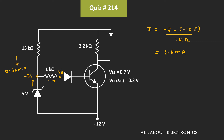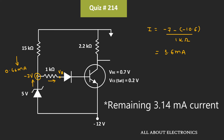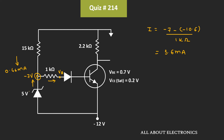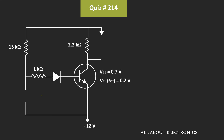So the remaining current should flow in this direction. If we apply KCL at this node, the remaining current should flow in the upward direction through this Zener diode. But if this Zener diode is operating in the breakdown region, then the current should flow in the downward direction. That means this Zener diode is not operating in the breakdown region, and it will simply act as an open circuit.